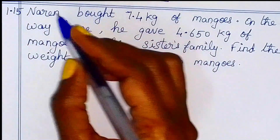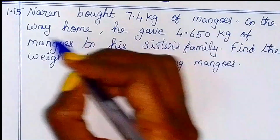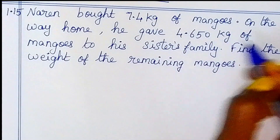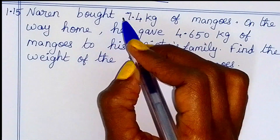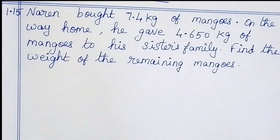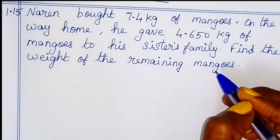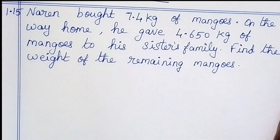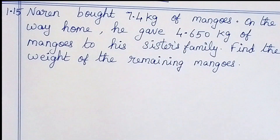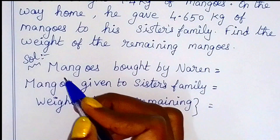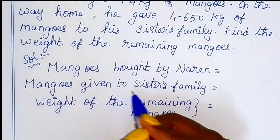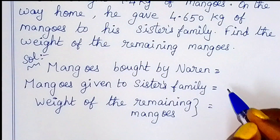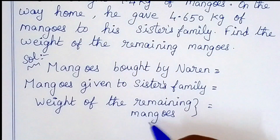Example 1.15: Naren bought 7.4 kg of mangoes. On the way home, he gave 4.650 kg of mangoes to his sister's family. Find the weight of the remaining mangoes. Since some mangoes were given to sister's family, the remaining weight requires subtraction. Mangoes bought by Naren, mangoes given to sister's family — we need to find the weight of the remaining mangoes. Subtract.